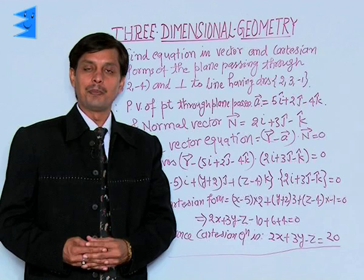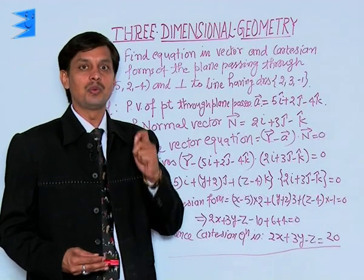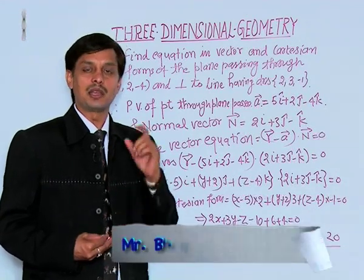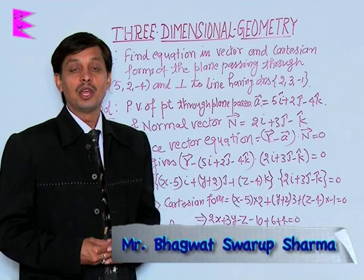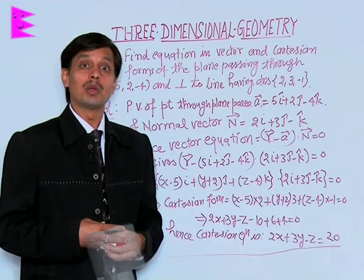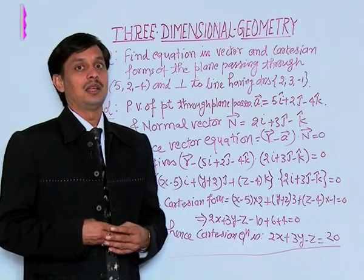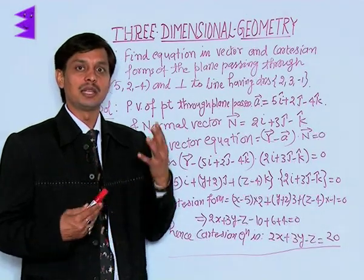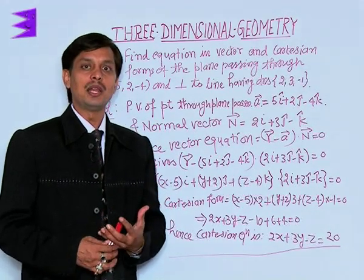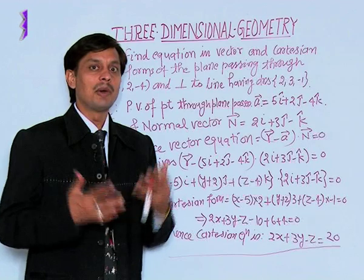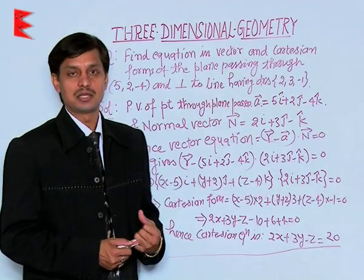Now, with the help of one example I want to tell you how to find the equation of a plane in Cartesian and vector form if it is passing through a particular point and its normal—that is, any line perpendicular to the plane—has some given direction ratios.